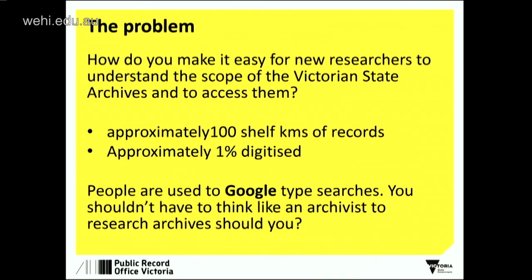The biggest problem is how do you make it easy for new researchers to get a grip on the archives, understand the scope? Because we are a government archive, we don't want people wasting hundreds of hours coming in our front door looking for stuff we simply don't have. We don't have manuscripts, we don't have diaries. We have lots of private stories — any interaction between individuals and government we have, and some of those are very private, moving stories. But if you're looking for manuscripts and diaries, go to the State Library of Victoria. If you're looking for other things, go to Museum Victoria.